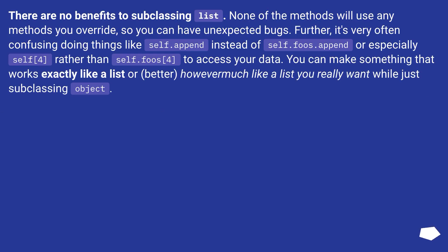There are no benefits to subclassing list. None of the methods will use any methods you override, so you can have unexpected bugs. Further, it's very often confusing doing things like self.append instead of self.fus.append, or especially self.for rather than self.fus.for, to access your data. You can make something that works exactly like a list — or better, however much like a list you really want — while just subclassing object.